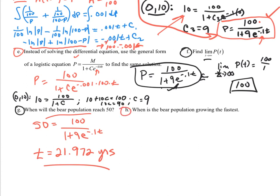Now, the question is, when will the bear population be growing the fastest? That means the slope is going to be the greatest. So in my logistic curve, I'm going to hit an inflection point right here. That inflection point is halfway between my two horizontal asymptotes. And so that's going to be spot on 50. So it's going to be exactly the same time period. So this is going to be when p is equal to 50, t is equal to the same thing, 21.972 years.